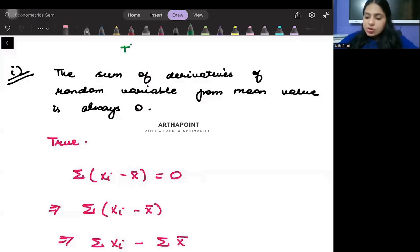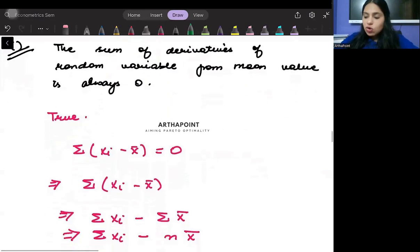If I look into the statement, it can be true, false, or uncertain. Please read it out. The sum of deviations of the random variable from the mean value is always zero.